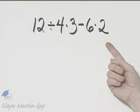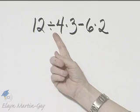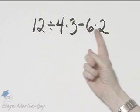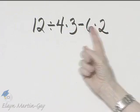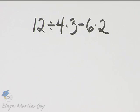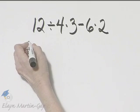Let's simplify this expression and remember order of operations. We have division, multiplication, subtraction, and multiplication. Multiplication and division are higher up in order of operations. We perform them first in order from left to right.